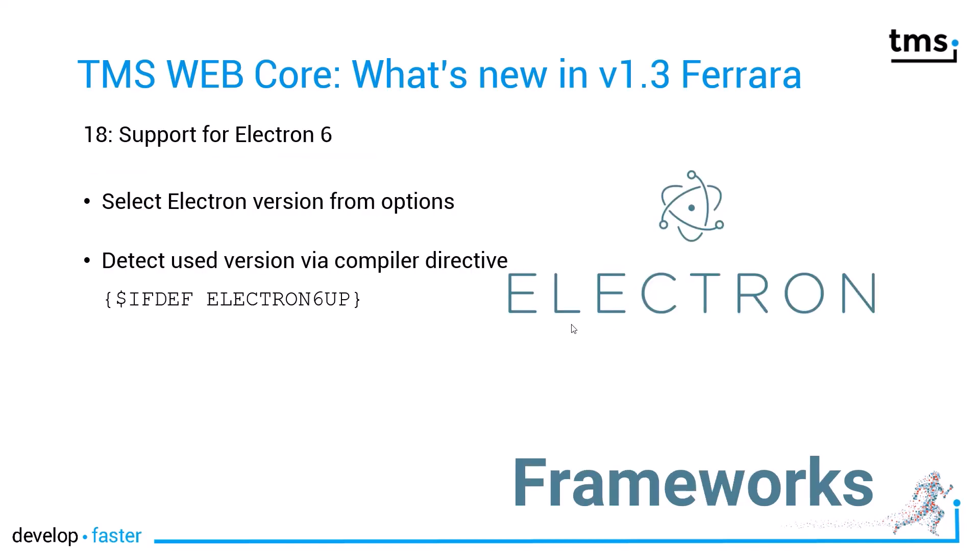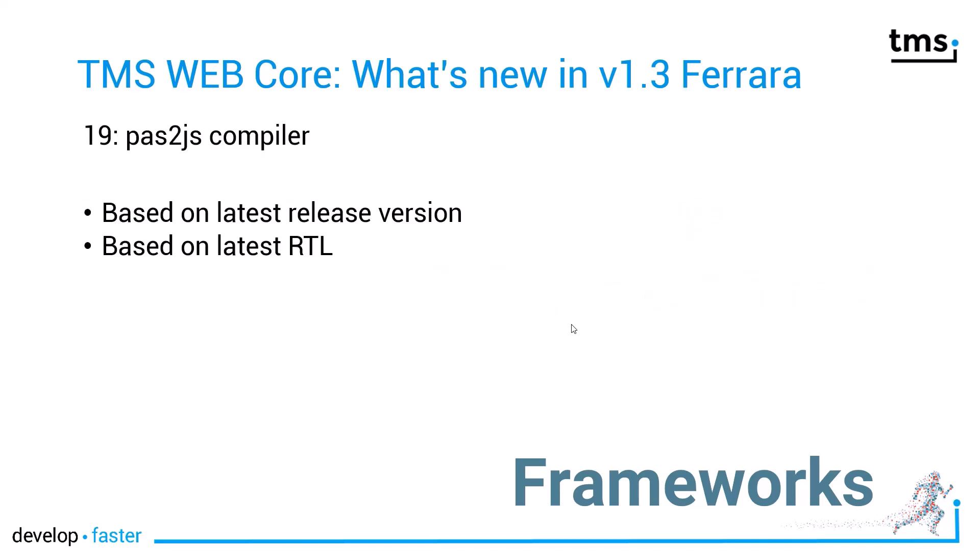TMS WebCore recently added Electron support so that you can build multi-platform desktop applications for Windows, Linux, and Mac OS. Even though it sounds strange at first to build web applications that run on the desktop, Electron makes that possible. Because Electron has multiple versions, TMS introduced the Electron 6 compiler directive so you can include specific features for Electron 6 and up. The Pascal-to-JS compiler has also been upgraded to the latest version, and all the latest RTL functions have been added.